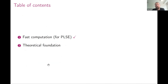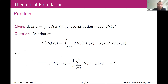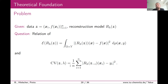Now for the part where we show that what we compute actually makes sense. We have n samples — here without noise — a reconstruction model, and we ask about the relation of the L2 reconstruction error to the cross-validation score. There is the famous Bakushinskii veto: any purely data-driven method has a possible data realization where it won't work. We have to circumvent this.